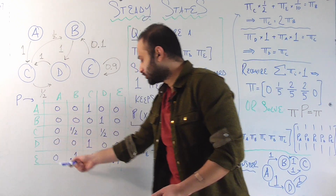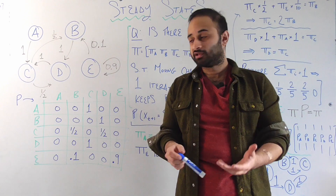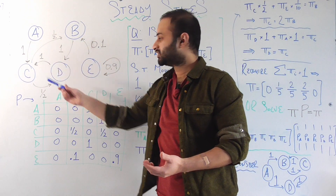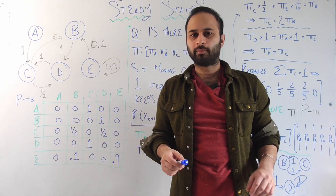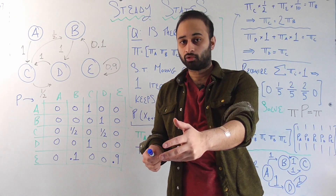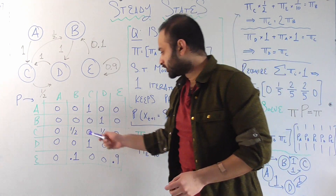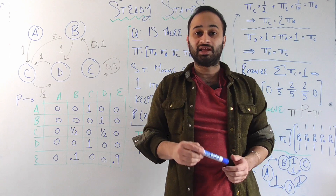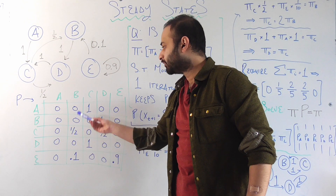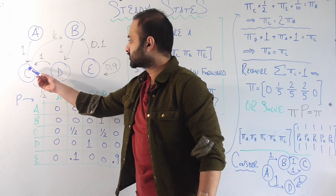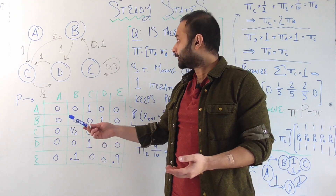Now let's look at the transition matrix. This is collecting all the probabilities you see with these arrows into a more structured format — it's just a bookkeeping tool that lets us see all the probabilities at once. For example, what does this one-half mean? That means that if I'm at C, there's a one-half probability that the next state I'll be at is B. And that corresponds exactly to this arrow here. All the transition probabilities are written just the same right here.